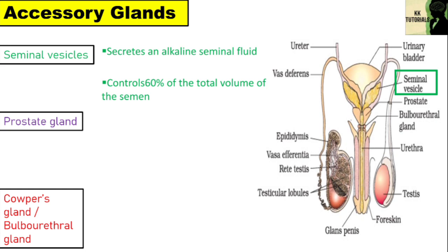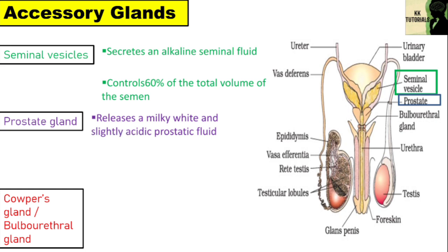The prostate gland is a large and single gland made up of 20 to 30 lobes and is located underneath the urinary bladder. It surrounds the urethra and releases a milky, white and slightly acidic prostatic fluid.